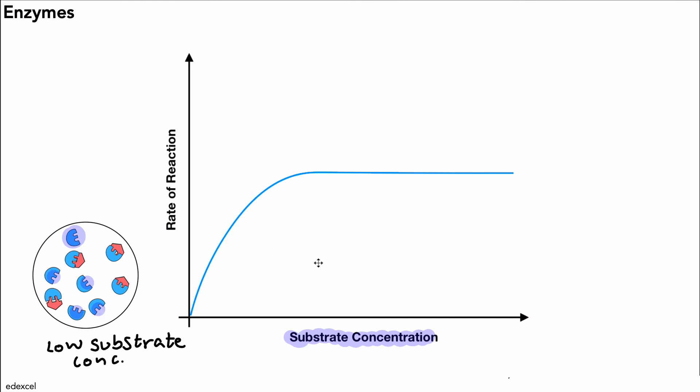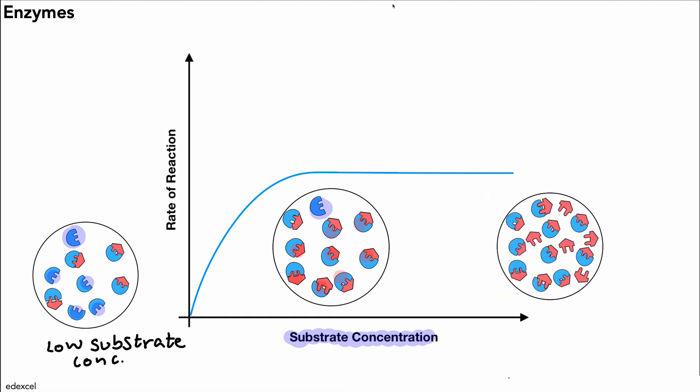Now if we increase our substrate concentration, while keeping the enzyme concentration the same, we can see here that there are much more of the active sites that are occupied. There's one enzyme that's not occupied, but all of the active sites for the remaining enzyme molecules are occupied. And therefore we have a faster rate of reaction because we've increased the substrate concentration.